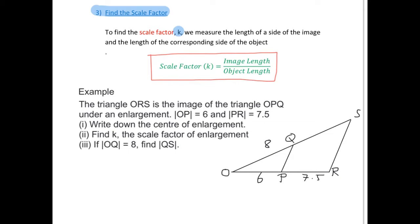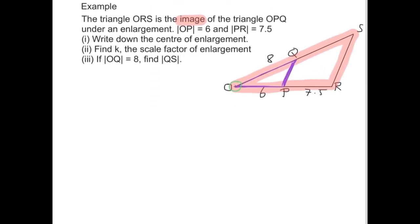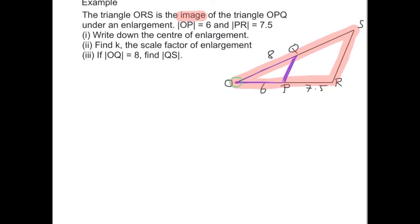If we look at our diagram here, we have two triangles. We have the triangle ORS and we are told that that is the image of the triangle OPQ under enlargement. So the triangle OPQ is the triangle, this smaller one down here. If we look at these two triangles, they share a point down here, this point O.